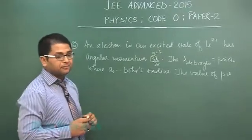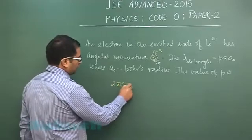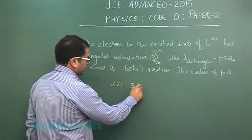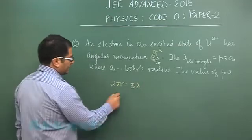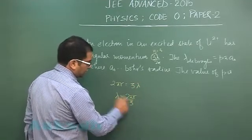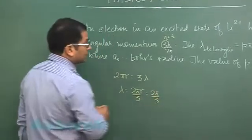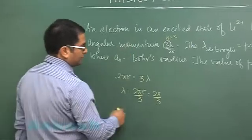We know that 2πr would be equals to nλ and λ is equal to 2πr by 3 where r is the radius of third orbit of lithium. So that would be a₀n² so that would be 3² by z